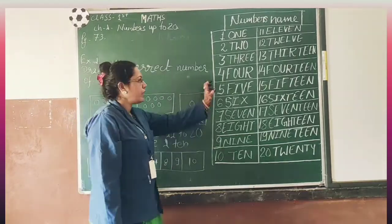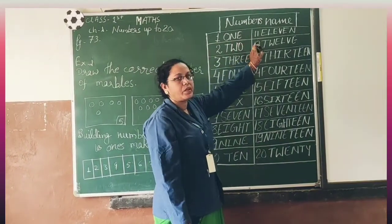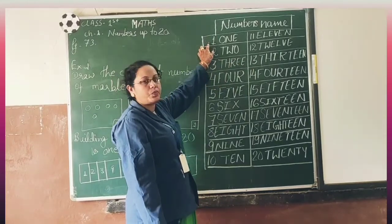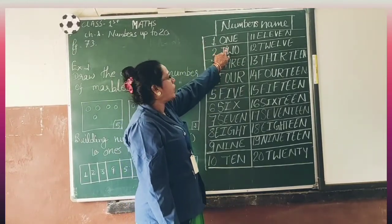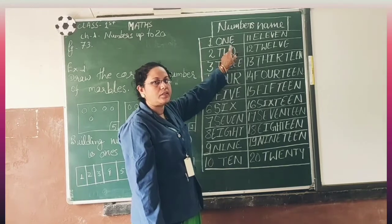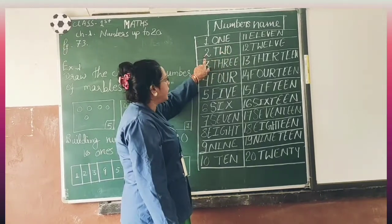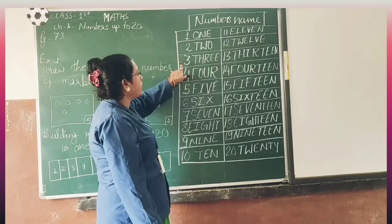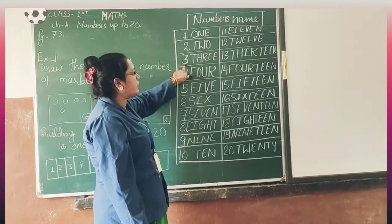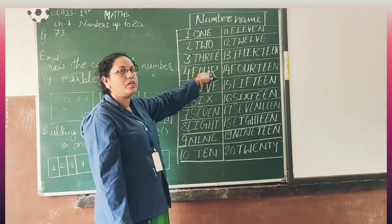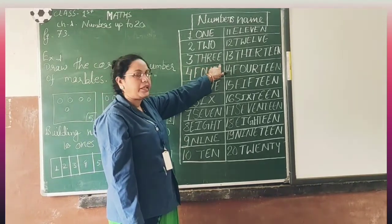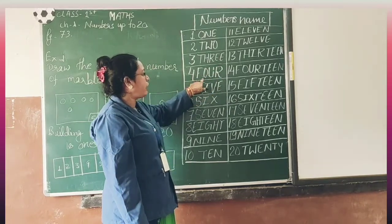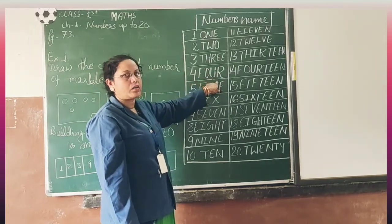Next is number names 1 through 20. 1 spelling is O, N, E — one. Next 2: T, W, O — two. Third, 3: T, H, R, double E — three. 4: F, O, U, R — four.